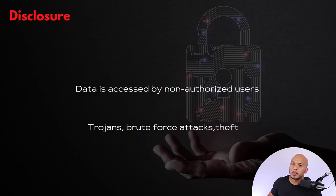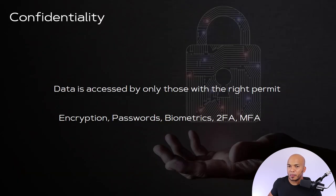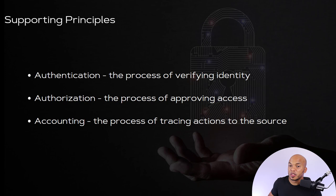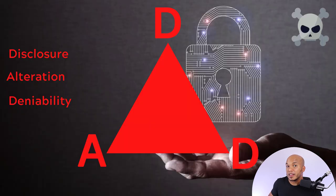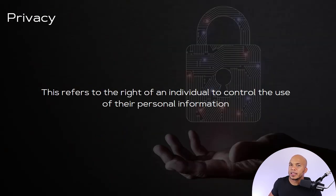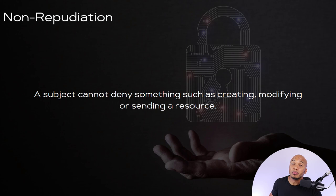Going back to the very beginning: the CIA triad — confidentiality, integrity, availability — with three supporting principles: authentication, authorization, and accounting. Then the DAD triad for the bad guys — disclosure, alteration, deniability. And then two additional pillars for cybersecurity that have evolved over time: privacy and non-repudiation. Thank you so much for watching the video. I will see you in the next class.